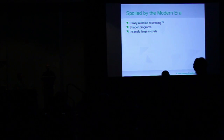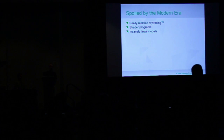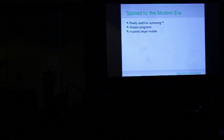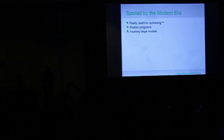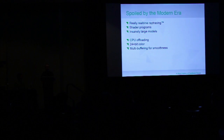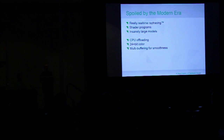As I was beginning to say, we are terribly spoiled by the modern era. We have things like really real-time ray tracing, shader programs, huge models, tons of memory, really fast CPUs. But there are a few more subtle things we take for granted: the fact that we can offload things from the CPU at all, that we have a lot of colors to work with, and that for arbitrary smoothness, we can multi-buffer all we want.